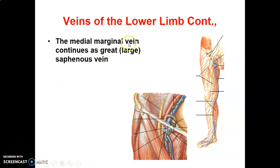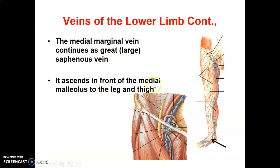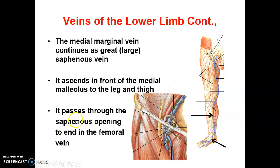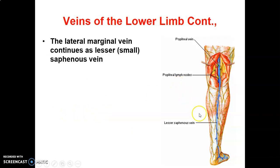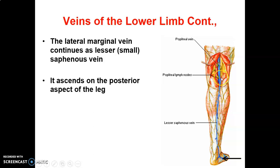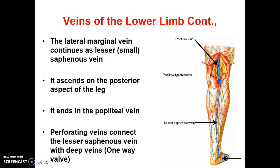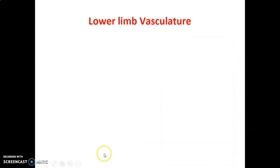The great saphenous vein ascends one finger breadth anterior to the medial malleolus, up the leg and thigh, and enters through the saphenous opening. The small saphenous vein is formed from the dorsal venous arch and the lateral marginal vein, passing posterior to the lateral malleolus along the posterior aspect of the leg to drain into the popliteal vein. Communicating perforating veins also drain the lesser saphenous into the deep system.